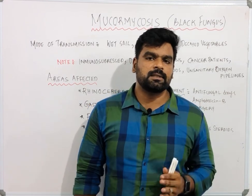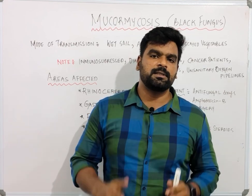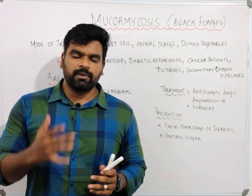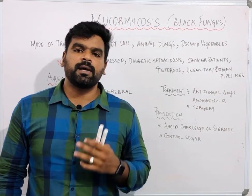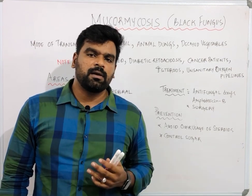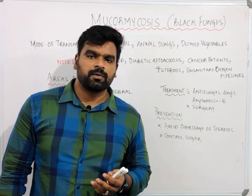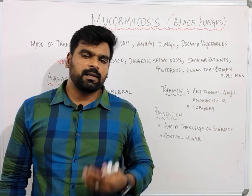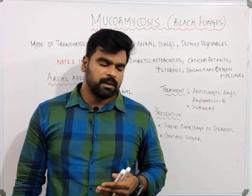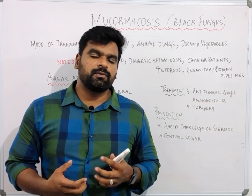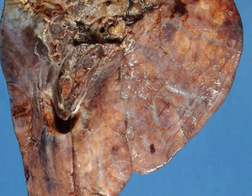Let me discuss which areas this disease affects. First, the rhino-cerebral area — it affects the sinus and cerebral area, and the patient may have nasal stiffness, nasal congestion, and uneasiness while breathing, along with breathing difficulty and facial swelling. If it involves the gastrointestinal tract, the patient may have enterocolitis, severe diarrhea, and many other GI symptoms. If it involves the pulmonary area — the lungs — the patient may have severe breathing difficulty and, if left untreated, it can lead to respiratory arrest.